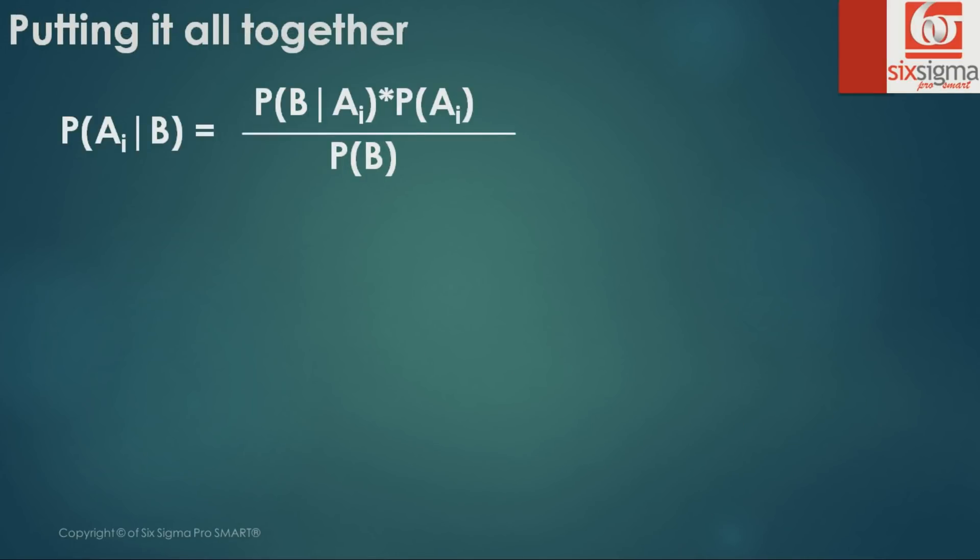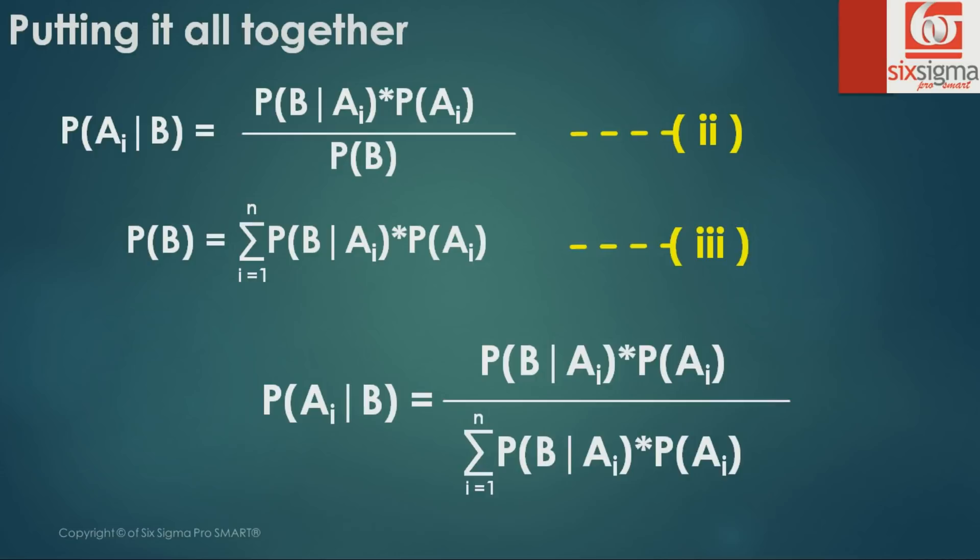Now we have a more generalized form of the equation which can extend to n number of prior probabilities. It's time to put it all together. What we obtained in equation 2 was this, and equation 3 was this. If we put the value of probability of B from equation 3 into equation 2 in the denominator, this is what we obtained. This is the generalized form of Bayes' theorem. But you don't have to necessarily derive it every time you solve a problem.